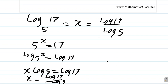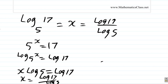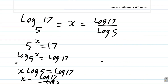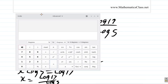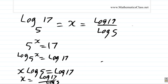Now let's use the calculator. Log 17 over log 5 equals 1.76. So log base 5 of 17 is equal to 1.76 to two decimal places. That's an example using the change of base rule.